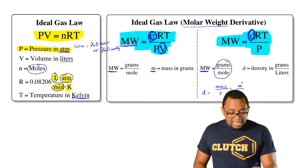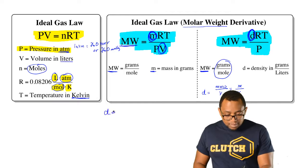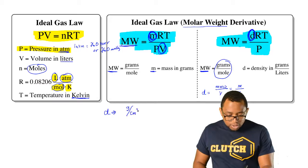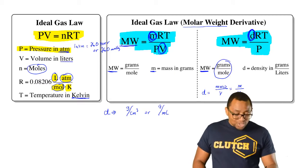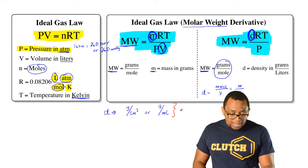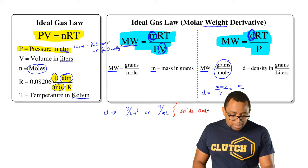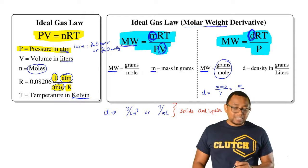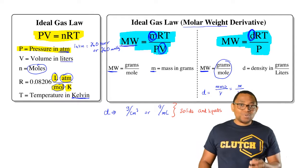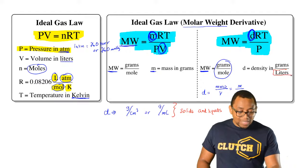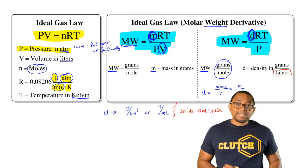We're accustomed to seeing density as being grams per centimeters cubed or grams per milliliters. That's true too, but that is for solids and liquids because they're more dense. Gases are not as dense, so they don't use centimeters cubed or milliliters. Instead, we use liters. So just remember that distinction.